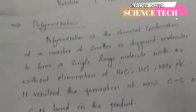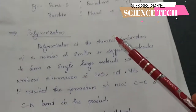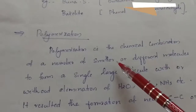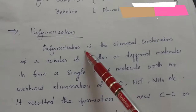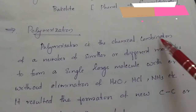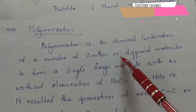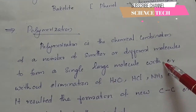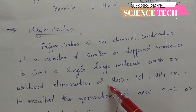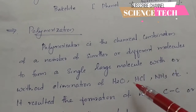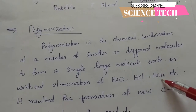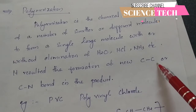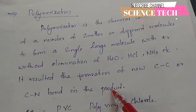What is polymerization? Polymerization is the chemical combination of a number of similar or different molecules to form a single large molecule, with or without the elimination of small molecules like water, HCl, or ammonia. It results in the formation of carbon-carbon single bonds or carbon-nitrogen bonds in the product.